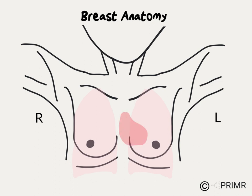Just deep to the chest wall are the lungs — one on each side. The heart lies between the lungs but extends mostly to the left side of the chest. The location of the heart can be a factor in planning radiation therapy for women with left-sided breast cancer.